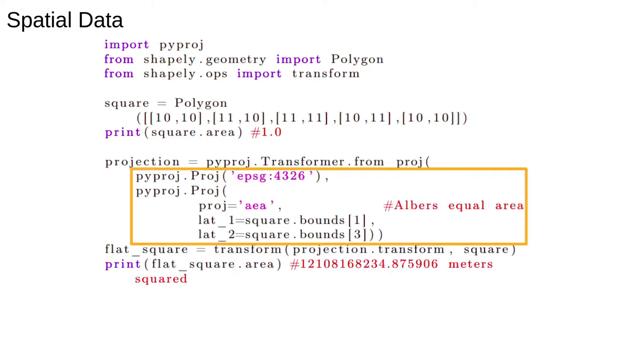We can use the projection trick from before. This time we transform from lat-lon, that is WGS84, into a flat projection. There are many to choose from. This one is the Albers equal area projection we showed before and requires a couple of parameters to define.